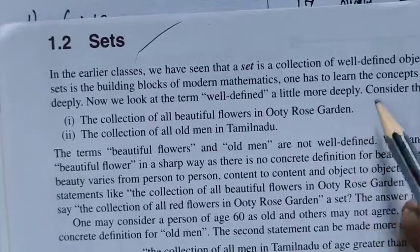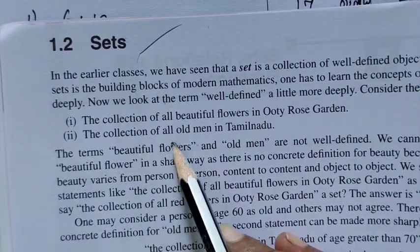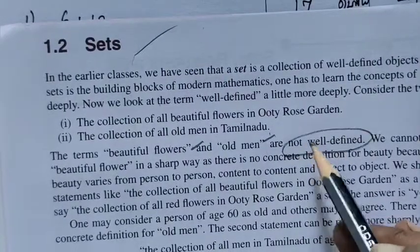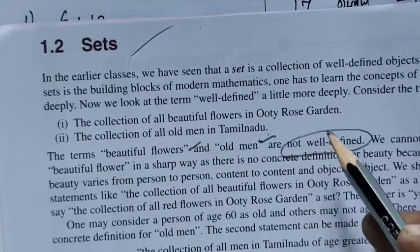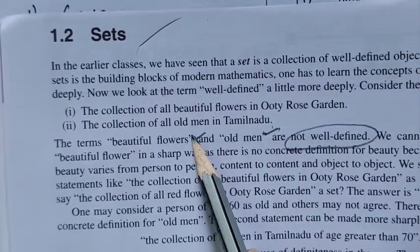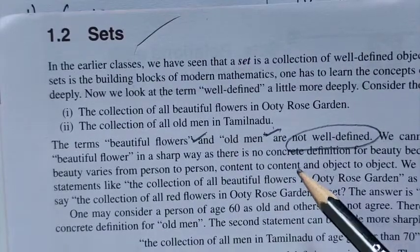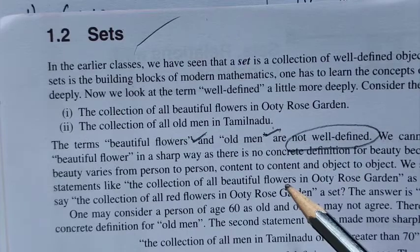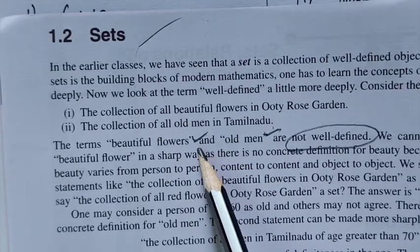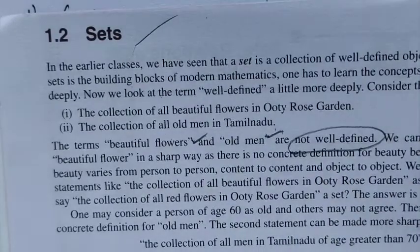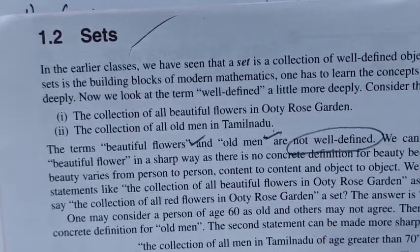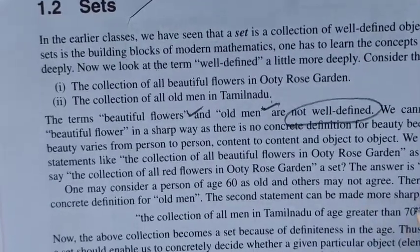The collection of all beautiful flowers in a rose garden, and the collection of all old men in Tamil Nadu — these are not well-defined. 'Beautiful flowers' is not well-defined because one flower may be beautiful for one person but not for another. 'Old men' is not well-defined because the age is not restricted — it is not specified as more than 70 or more than 60.